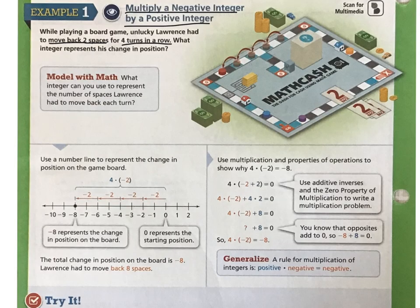We can use both a game board or, in this case, even easier, a number line in order to represent the change in his position. So 0 is going to represent Lawrence's starting position. He moves back two spaces. So you can see here that we've got groups of negative 2, negative 2, negative 2, and negative 2.